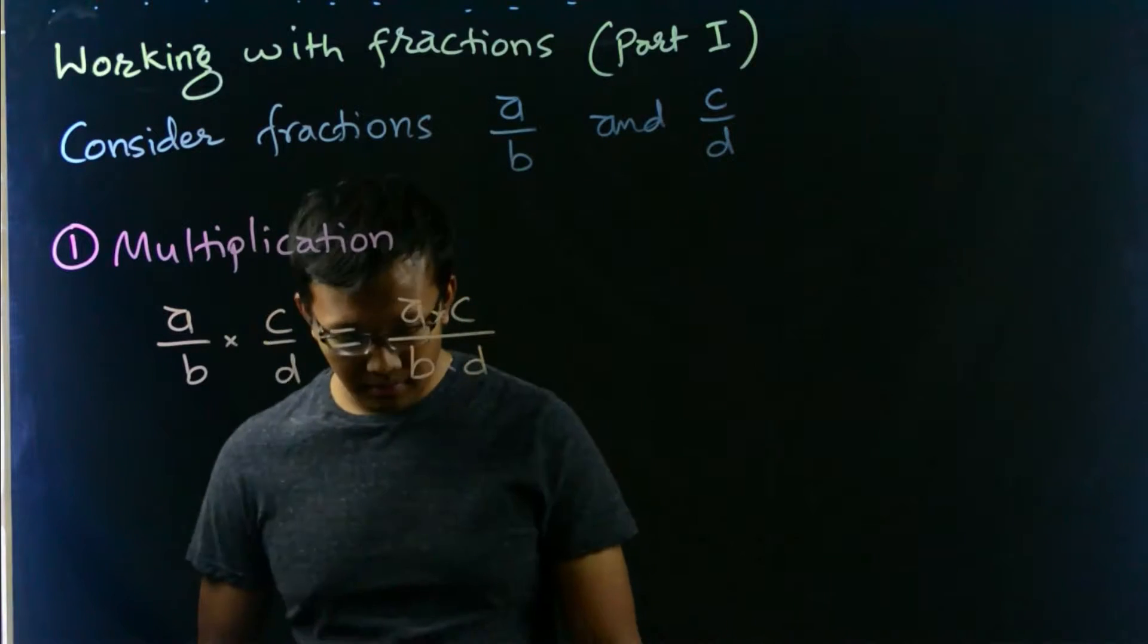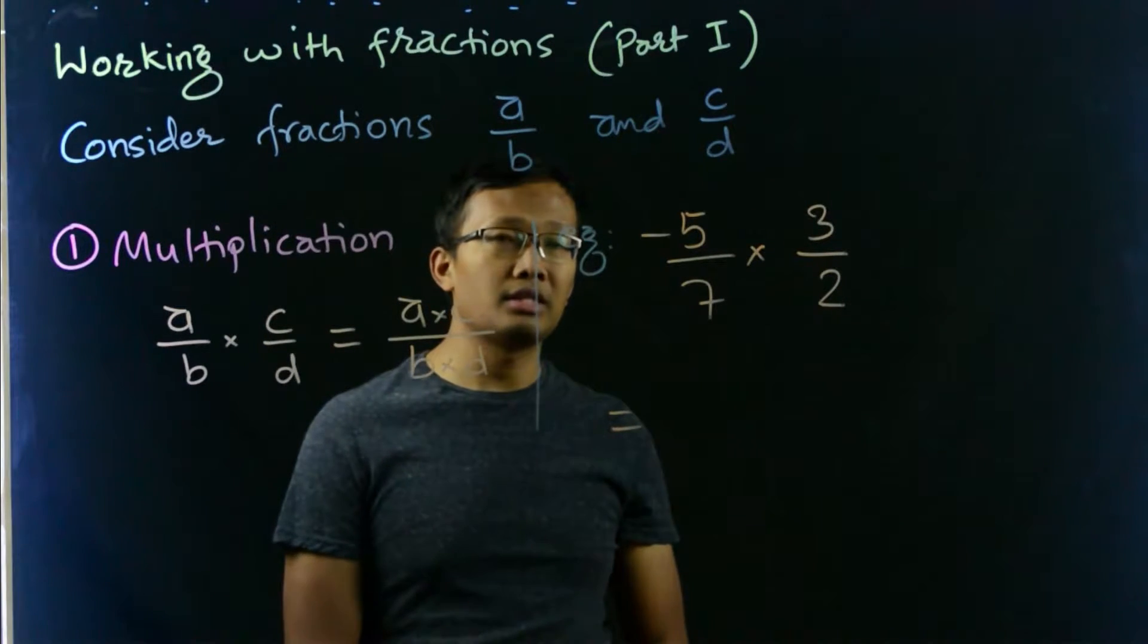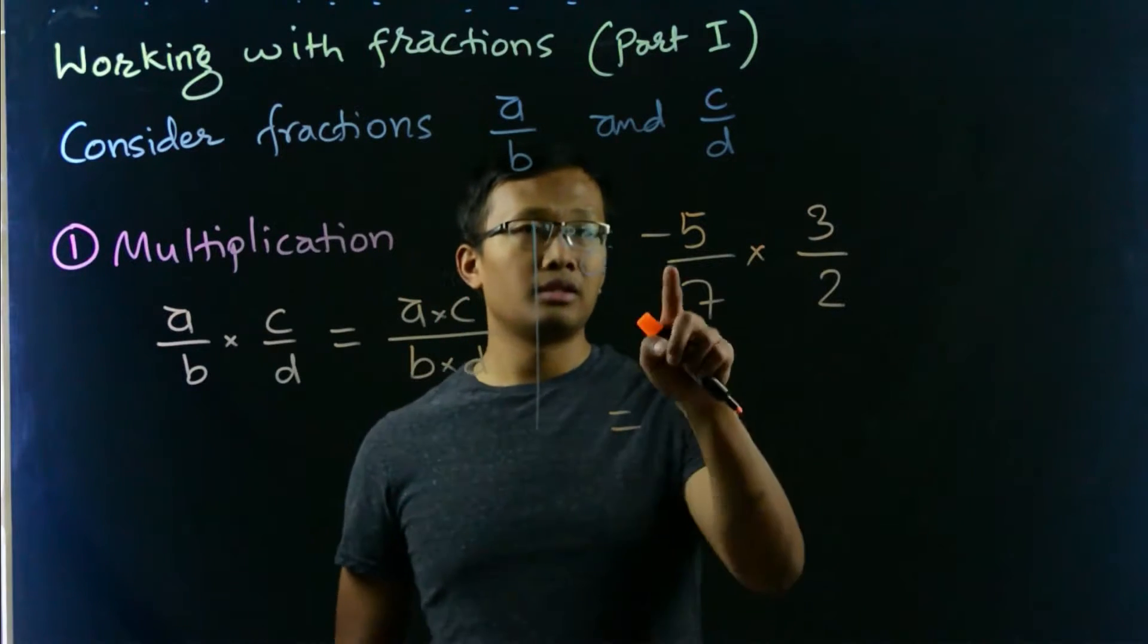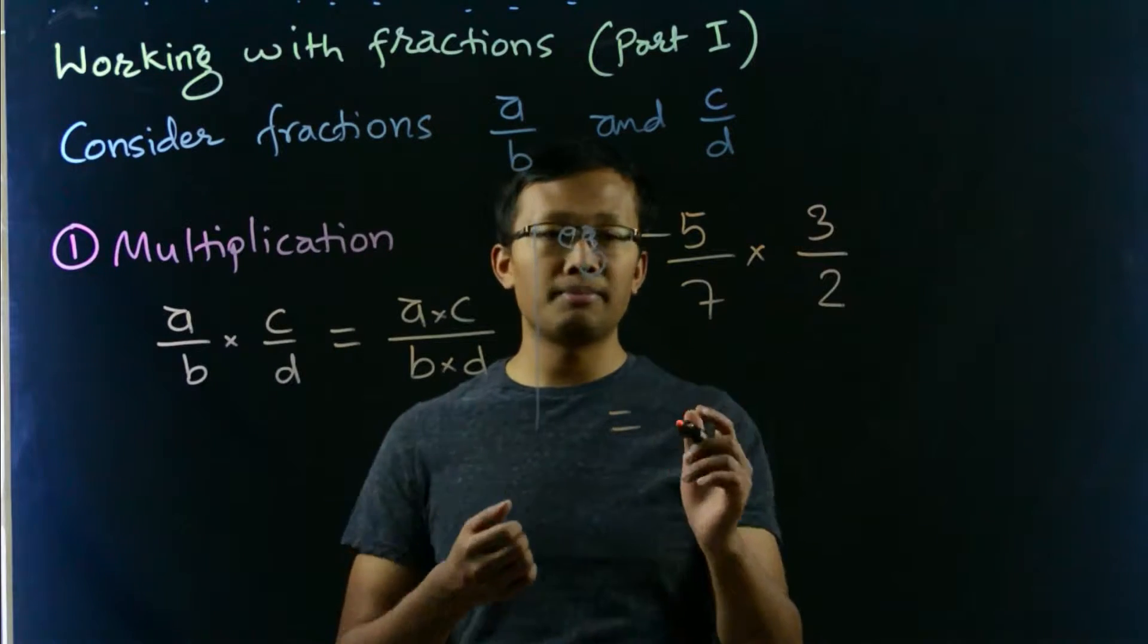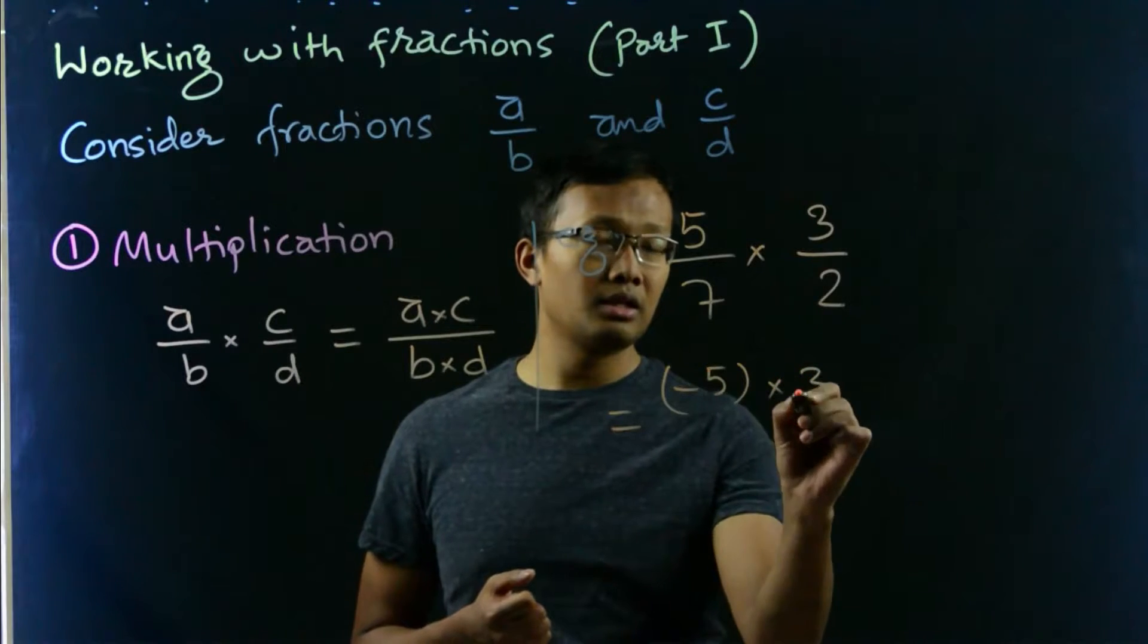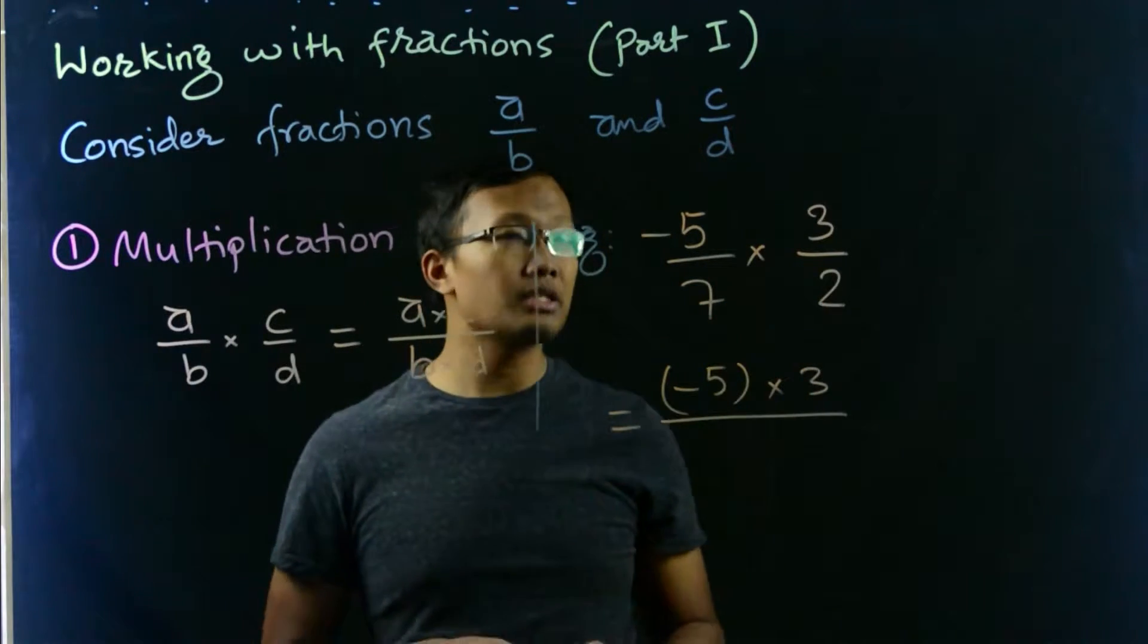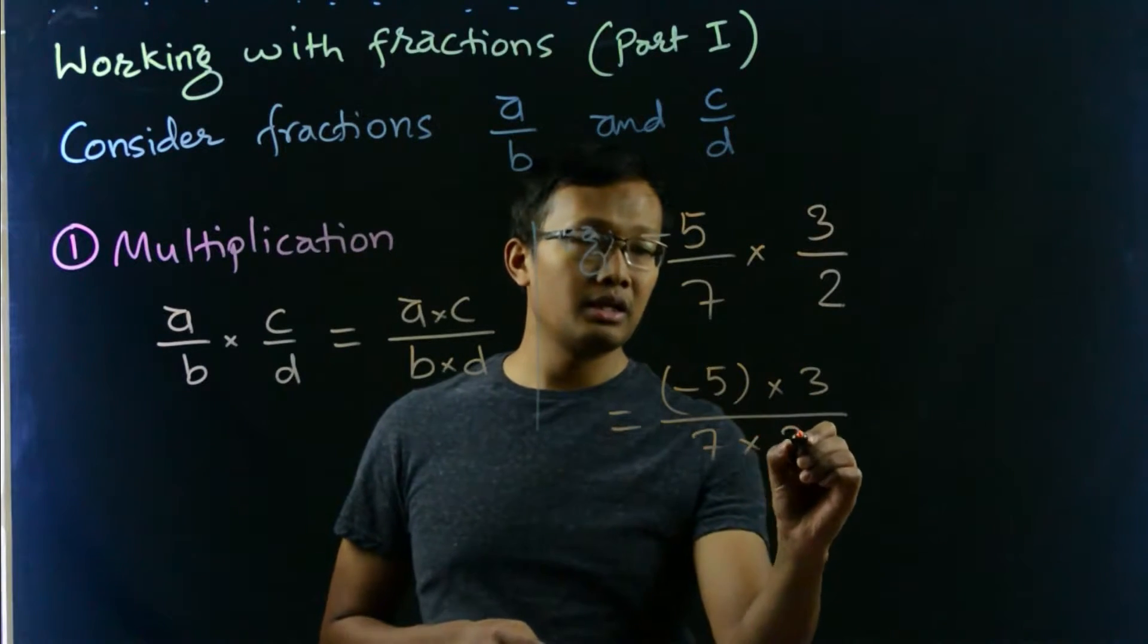Let's take an example. Consider two fractions: negative 5 over 7 times 3 over 2. Here, negative 5 and 3 are the numerators, so let's multiply them: negative 5 times 3. And 7 and 2 are the denominators, let's multiply them and put them in the denominator.